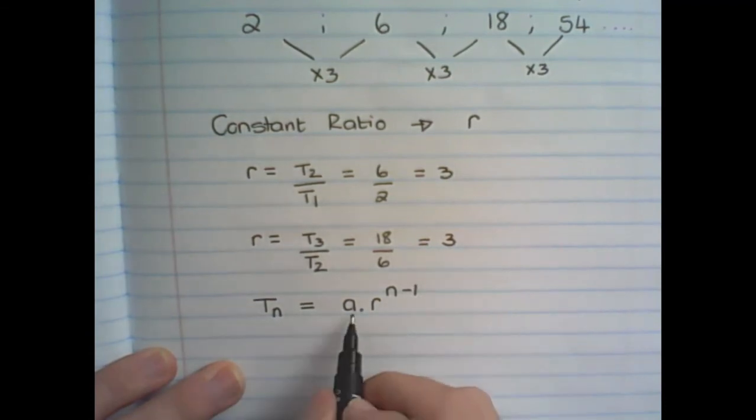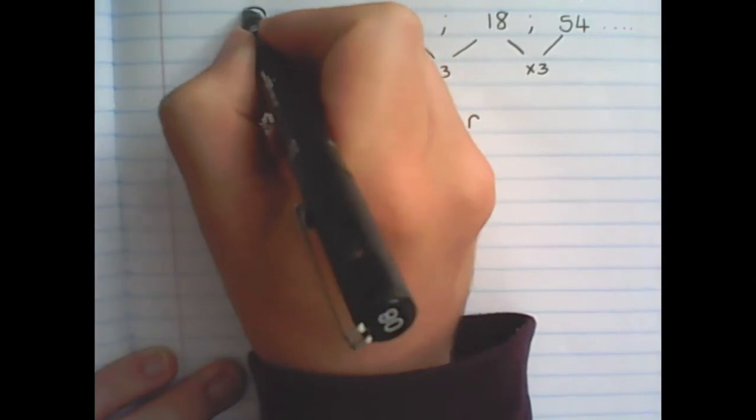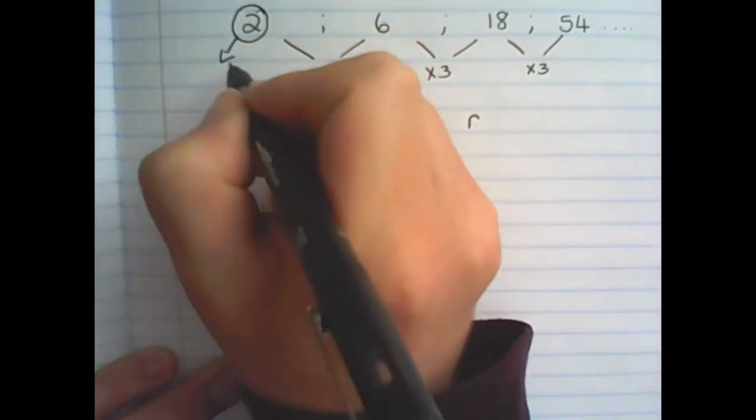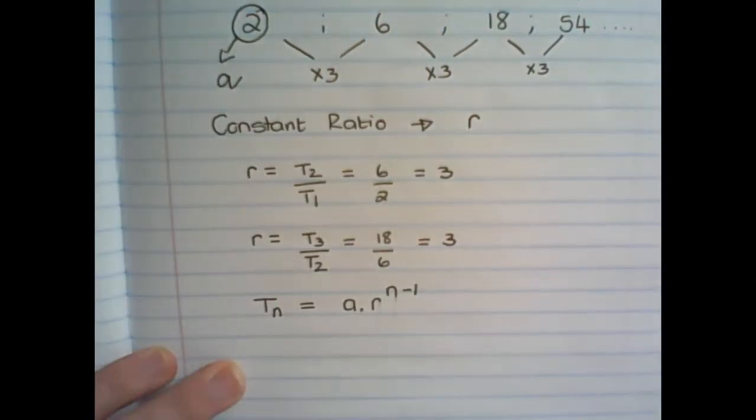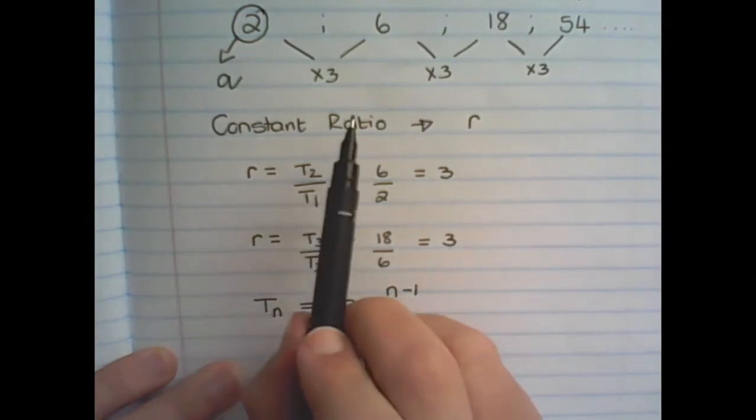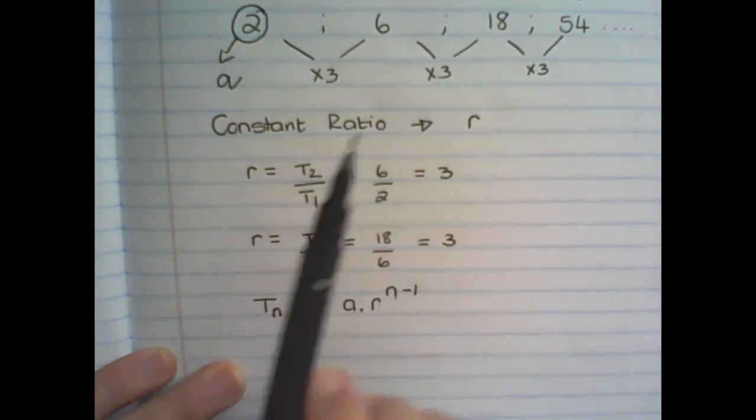Where A represents the first term in the pattern, and R represents the ratio between the terms.